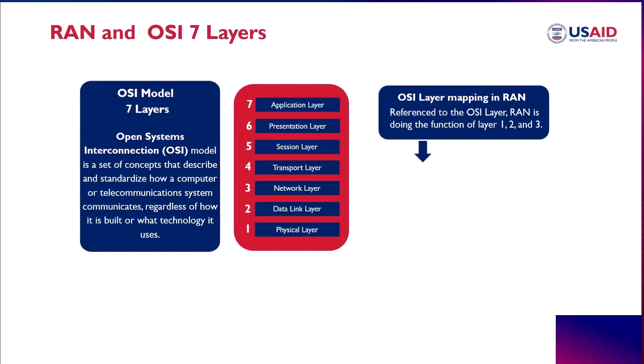Regardless of how it is built or what technology it uses, the OSI layer has seven layers, each of which represents a different aspect of communication between devices on the network.